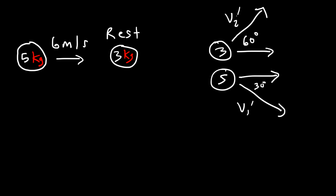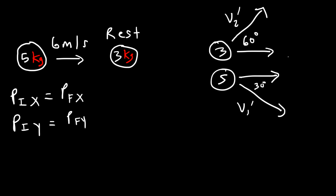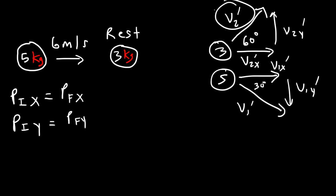We have a two-dimensional collision problem. For any collision, whether inelastic or elastic, momentum is conserved. For a two-dimensional problem, you need to ensure that momentum in the x-direction is conserved — the total x-momentum before the collision must equal the total x-momentum after — and likewise, momentum in the y-direction must be conserved. Feel free to pause the video and calculate the final velocities of both balls.